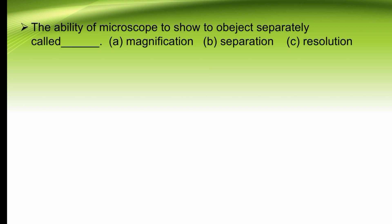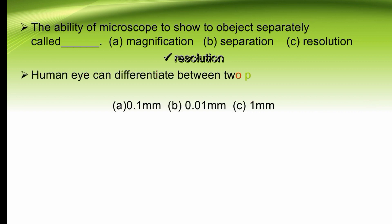Our next MCQ: the ability of a microscope to show two objects separately is called dash — magnification, separation, or resolution. The ability of a microscope to show two closely related objects separately is called resolution. The right option is C. Human eye can differentiate between two points at least dash apart — 0.1 mm, 0.01 mm, or 1 mm. The right option is 0.01 mm.